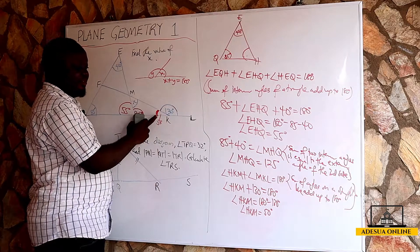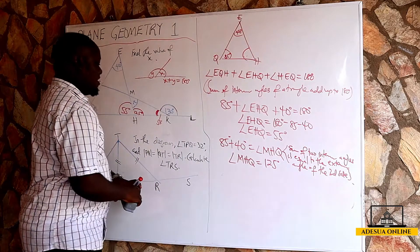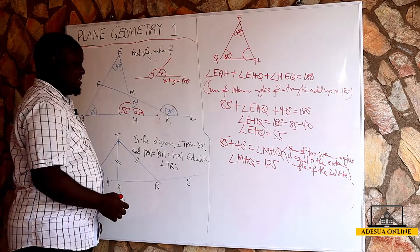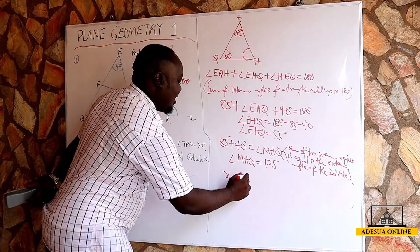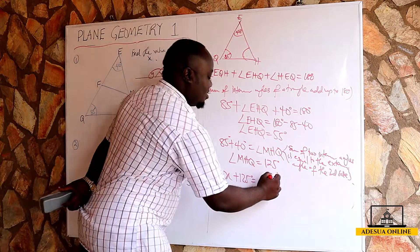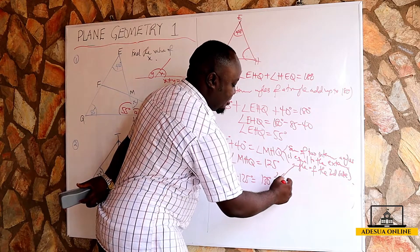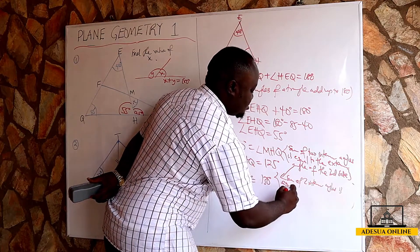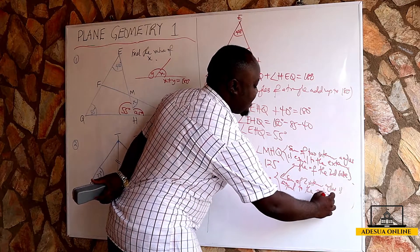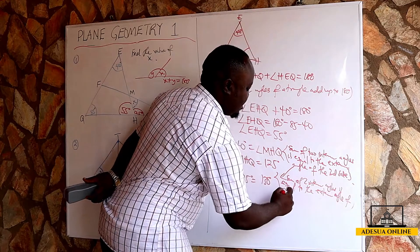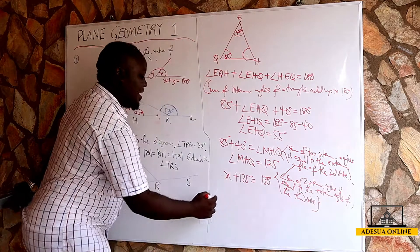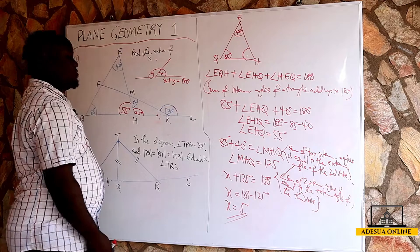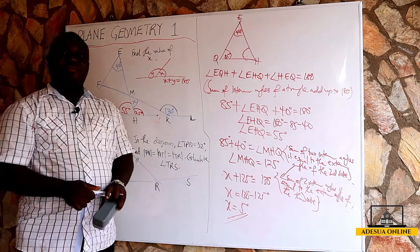Alternatively, we don't need to solve for 50 — we can use the simpler approach: the sum of two interior angles is equal to the exterior angle of the third side. So X plus 125 is equal to 130 degrees, meaning X equals 130 minus 125, so X is equal to 5 degrees.